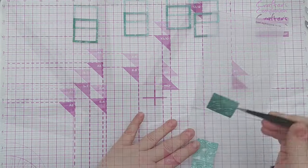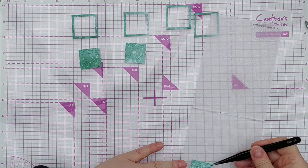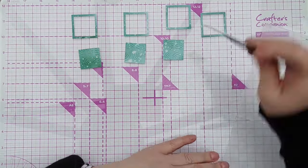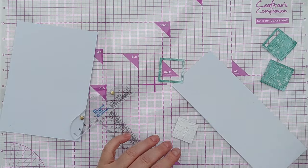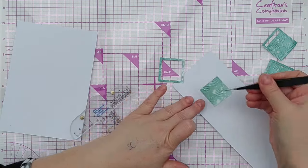Next I took the embossed squares and matched them back up with their frames because I wanted each square and frame to look like one piece once they were glued together and on my card.